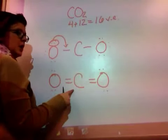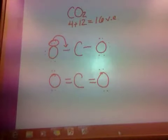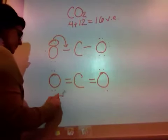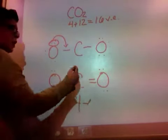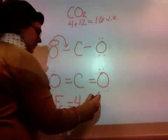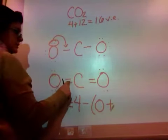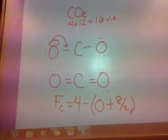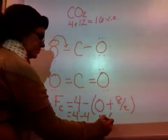Now let's look at how many electrons carbon has around it: 1, 2, 3, 4, 5, 6, 7, 8. Let's check the formal charge. Formal charge of carbon: 4 valence electrons minus 0 lone pairs — I don't have any dots around carbon — so 0. How many electrons are acting in a bond? 1 through 8, so 8 over 2. This gives me 4 minus 4. So the formal charge is 0.